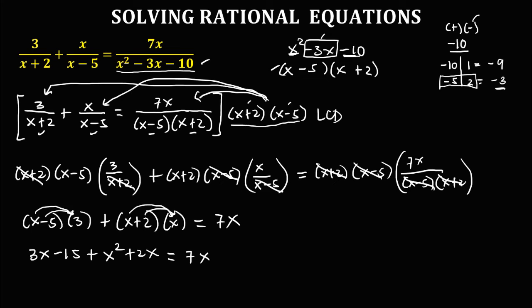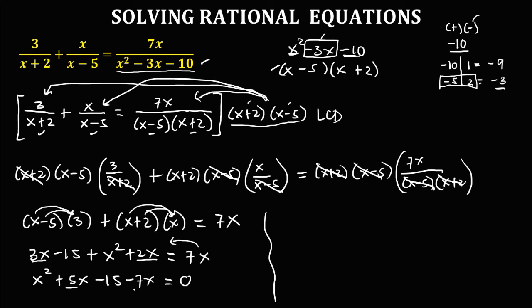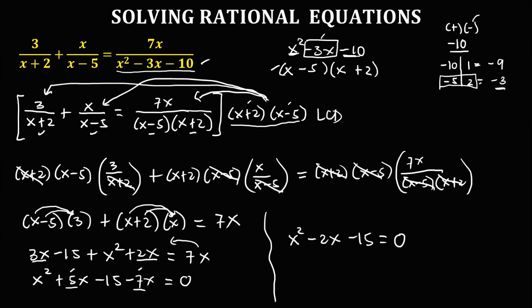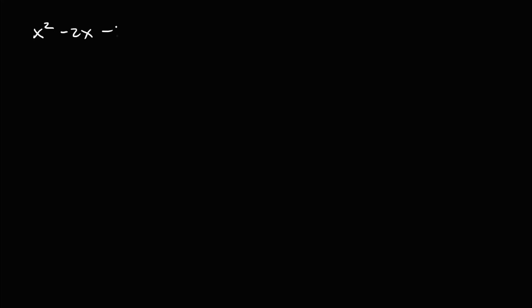Then arrange this equation starting with the highest exponent and combine like terms. Starting with x squared, then 3x plus 2x is positive 5x, then minus 15. Transposing the 7x gives negative 7x, equals 0. Combining 5x and negative 7x: 5 minus 7 is negative 2x. So we have x squared minus 2x minus 15 equals 0.